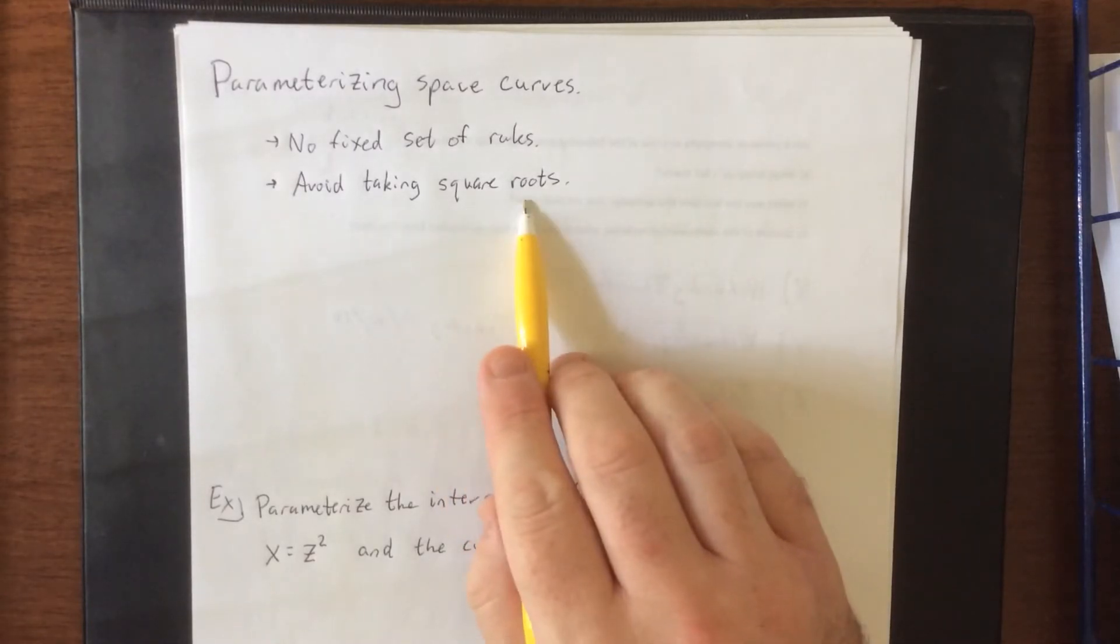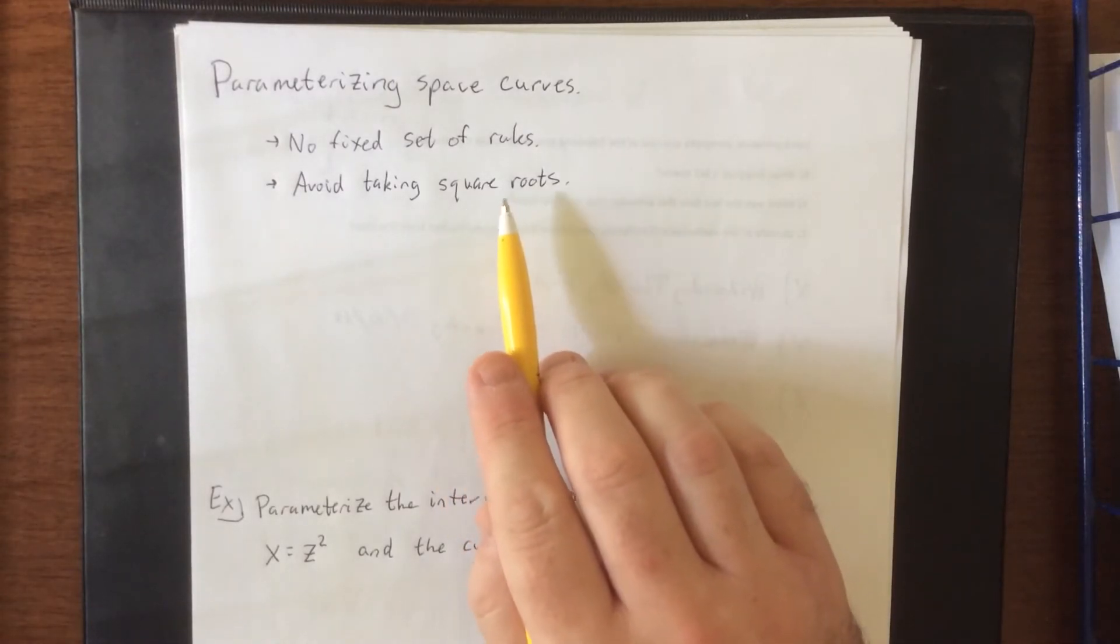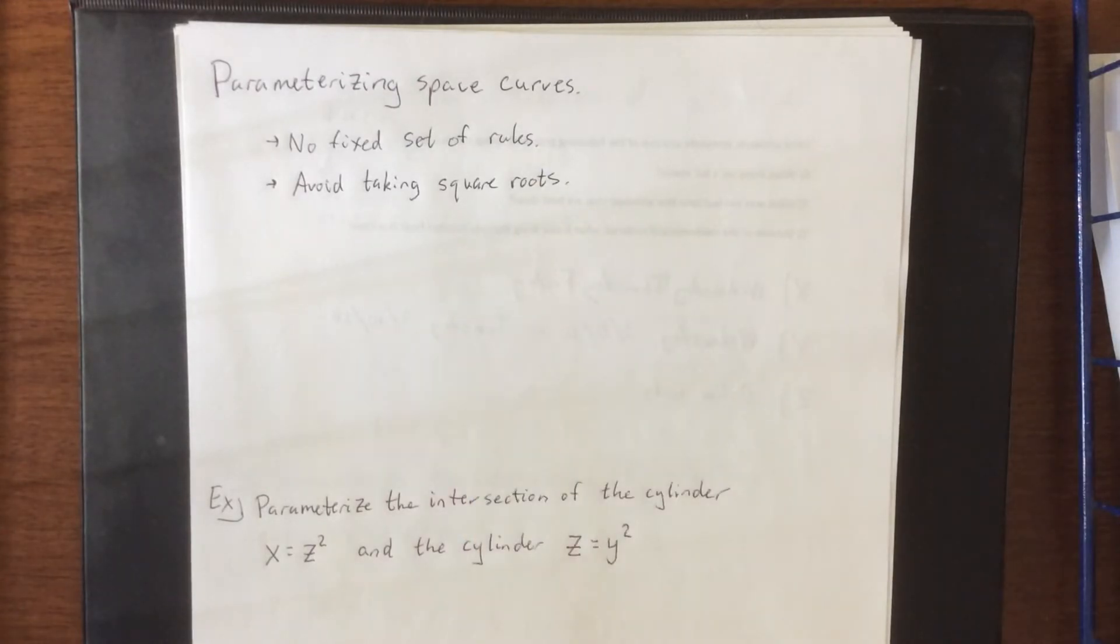So if you do see things that do involve squares, either make it a point to never solve for something that was squared or take a look for patterns like if you see a square plus a square. That's usually indicative of a Pythagorean identity that you could be using.